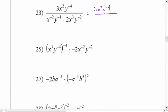Now we'll look at the bottom. This is x to the negative two times y to the negative one times two times x cubed times y to the negative two. With all that multiplication I can do it in whatever order I want. So I'm going to put the two first and then put the x's together — x to the negative two times x to the third. Since I'm multiplying I add: negative two plus three is x to the first. Then y to the negative one and y to the negative two — adding negative one and negative two gives y to the negative three.